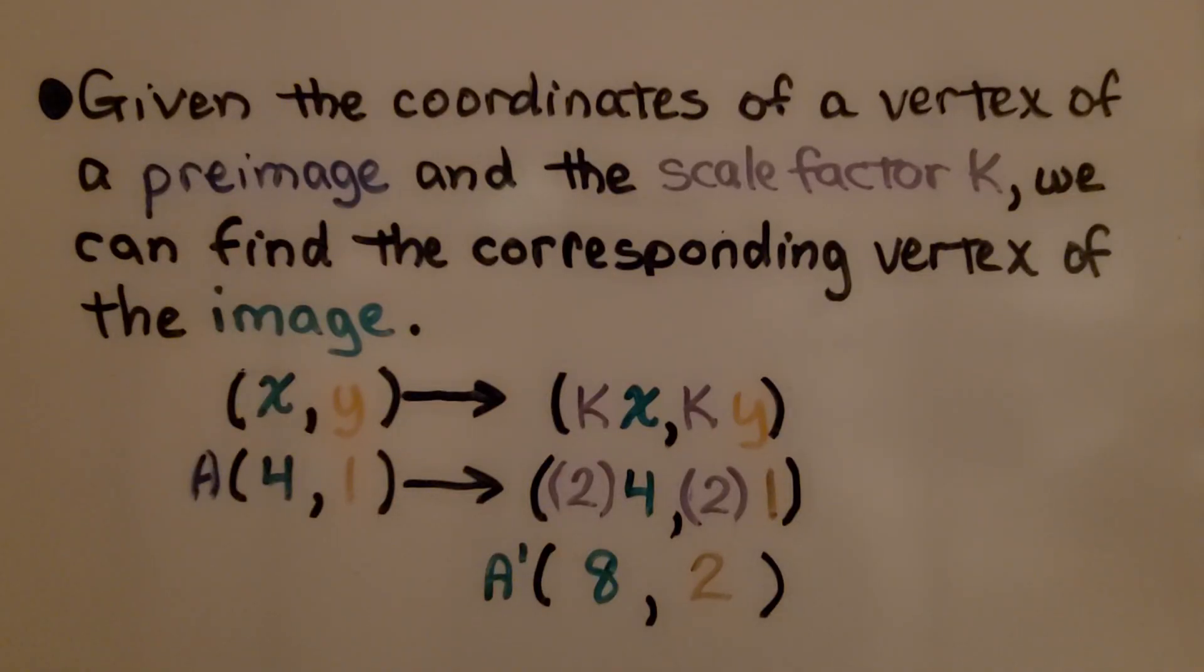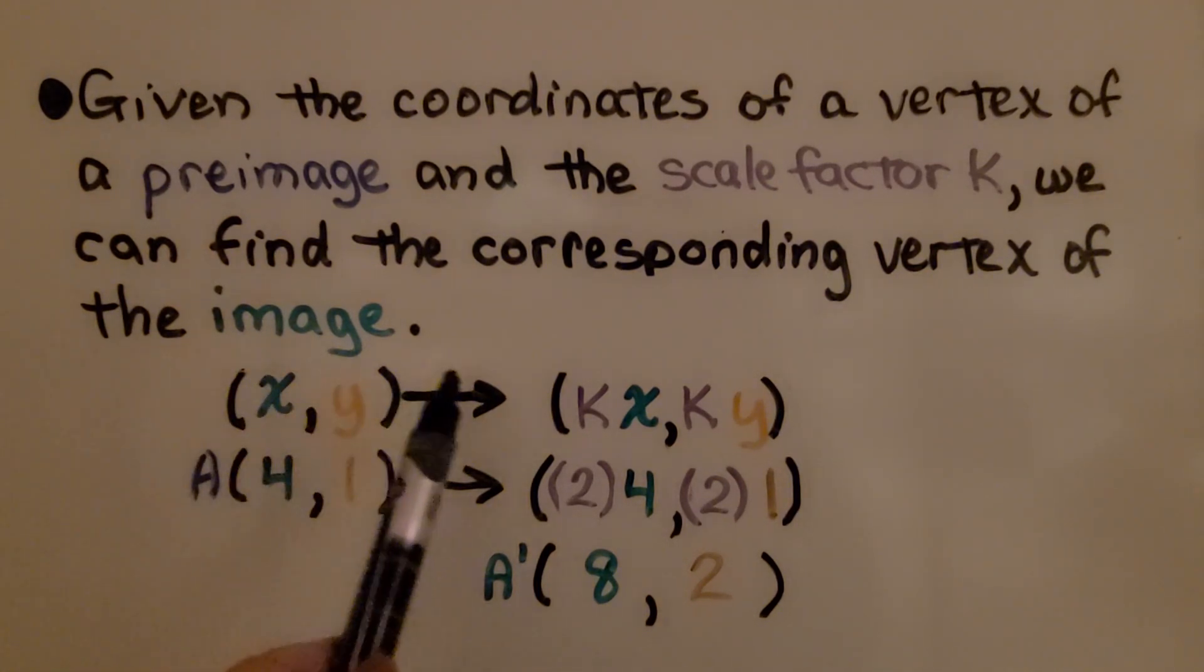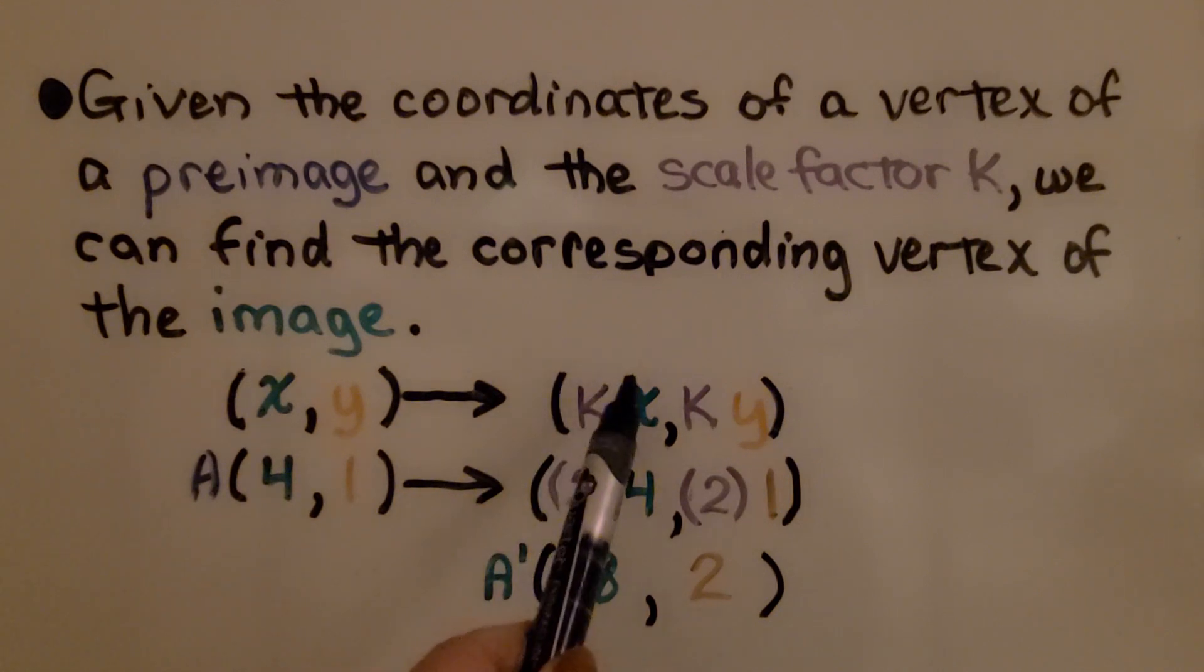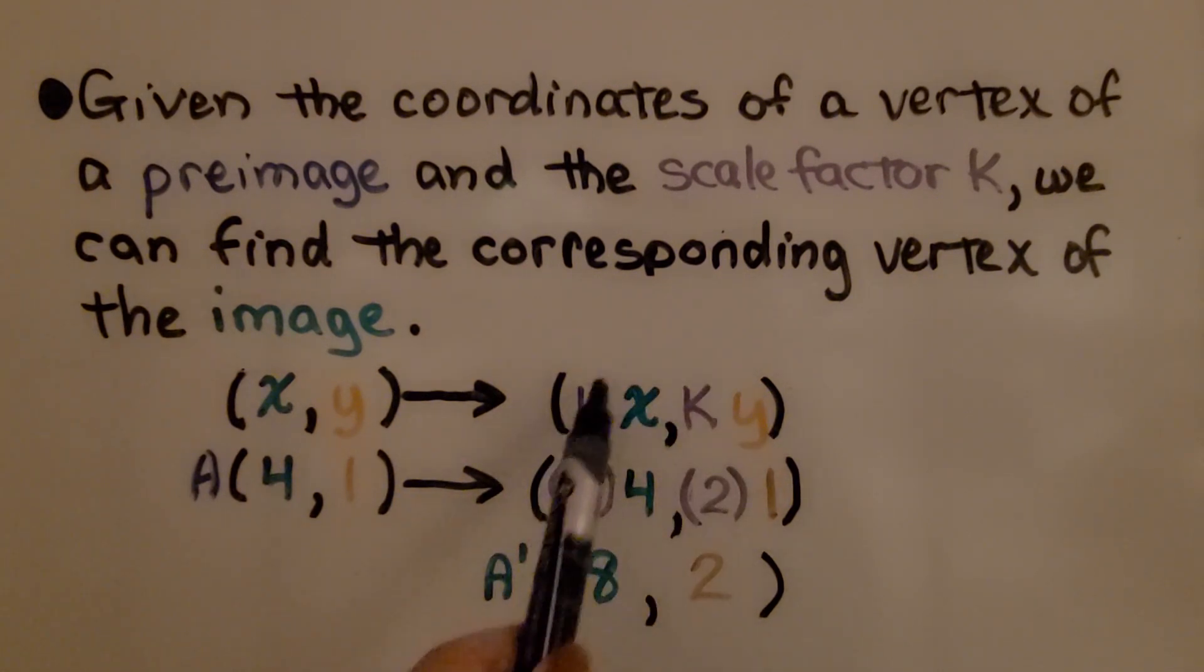Given the coordinates of a vertex of a preimage and the scale factor k, we can find the corresponding vertex of the image. We know that we have our x, y coordinates and it will map to k multiplied by x and k multiplied by y, whatever k is, whatever that scale factor is.